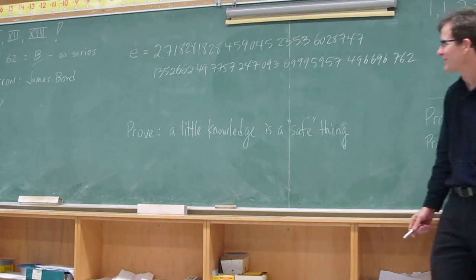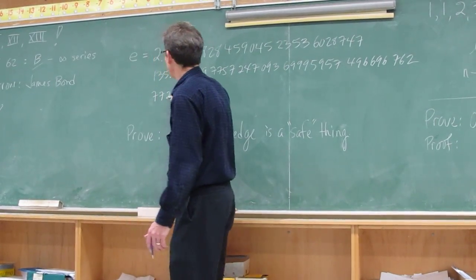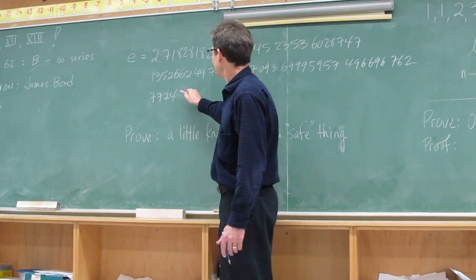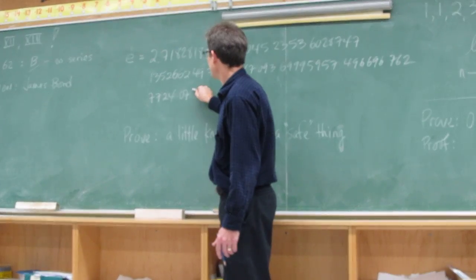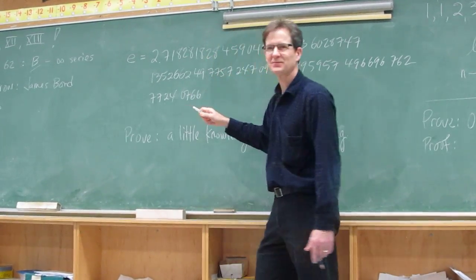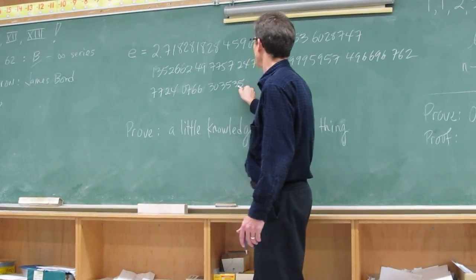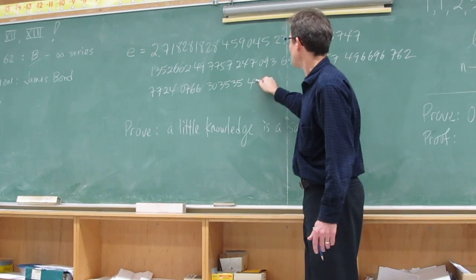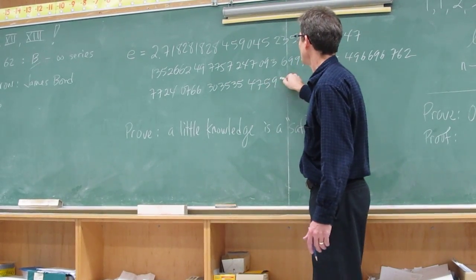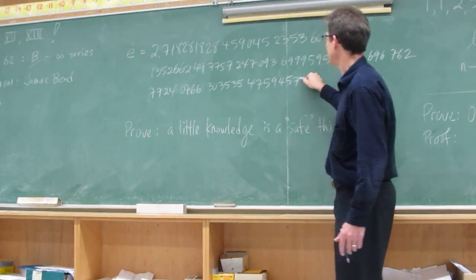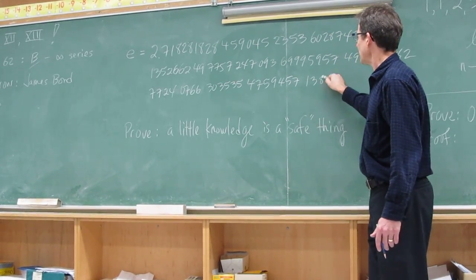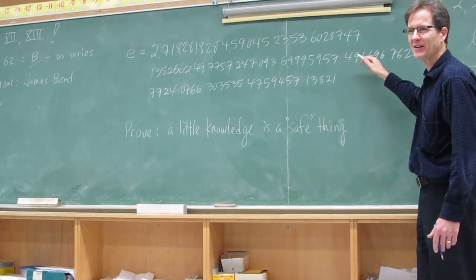All right, third row. 7, 7, 2, 4, 0, 7, 6, 6, 3, 0, 3, 5, 3, 5, 4, 7, 5, 9, 4, 5, 7, 1, 3, 8, 2, 1. So far so good?